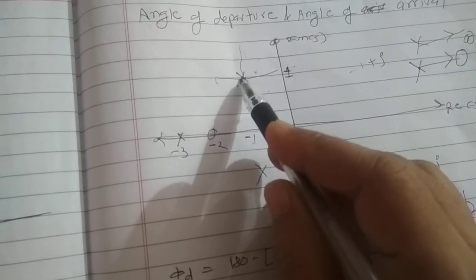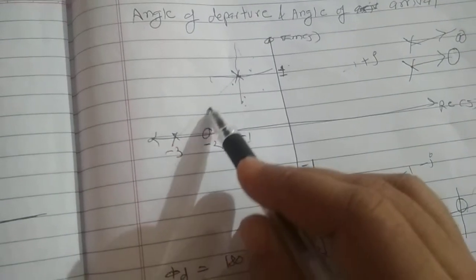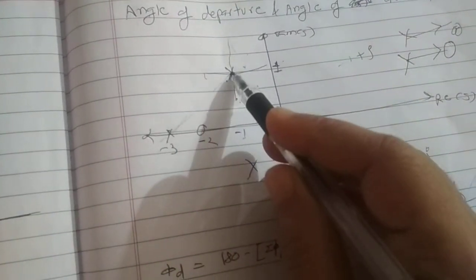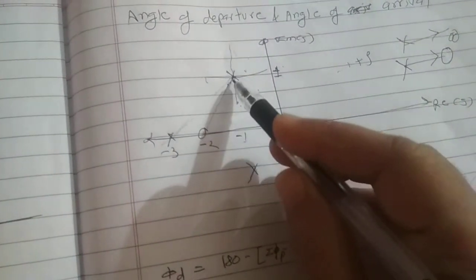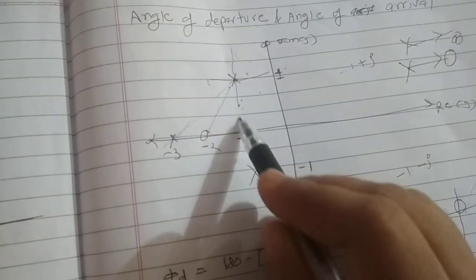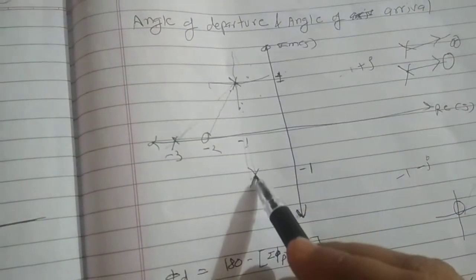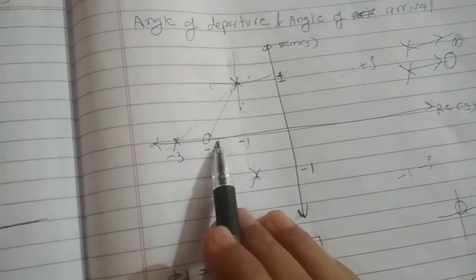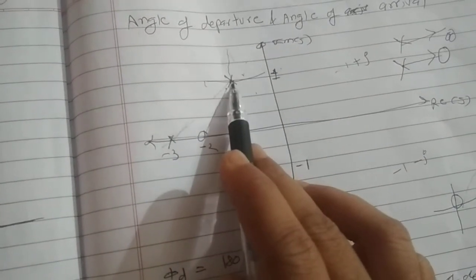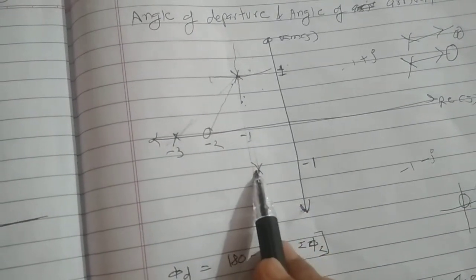First step: connect the pole at which you want to find the angle of departure with the remaining poles and zeros. So there are three poles, so we connect this pole with the remaining poles and zeros.